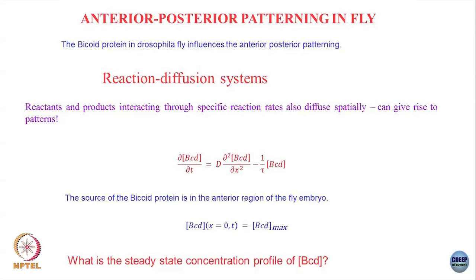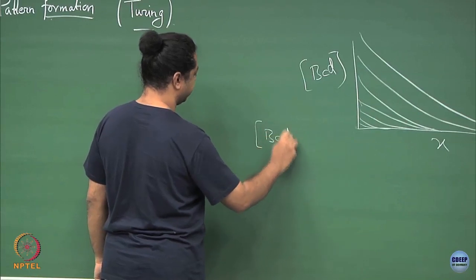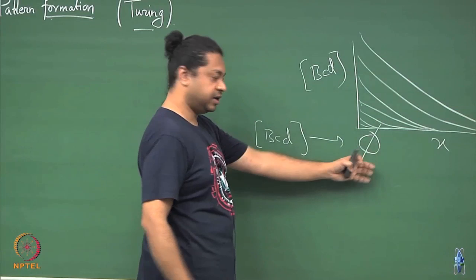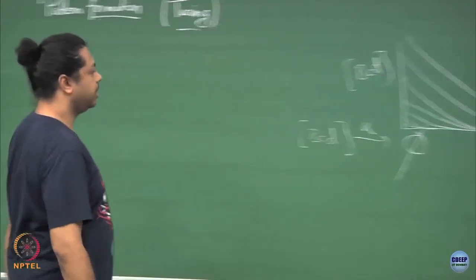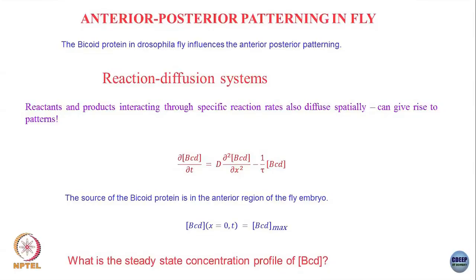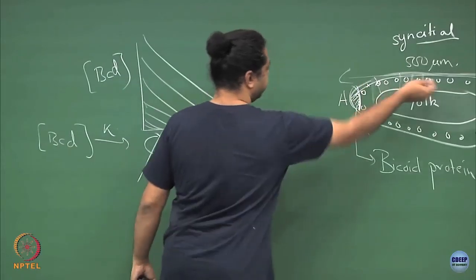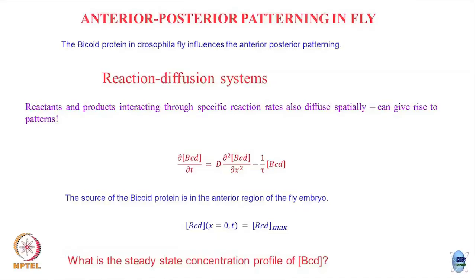This is a very simple example of a reaction-diffusion system. In general a reaction-diffusion system has some sort of chemical reaction — reactants and products interacting — but they are also diffusing, and that can give rise to patterns. You can think of this Bicoid as a very simple case: the reaction being that the Bicoid protein diffuses and also degrades with some rate kappa. It is produced at the anterior pole — so it has a source and it diffuses — which is why it is called the synthesis-diffusion-degradation model.